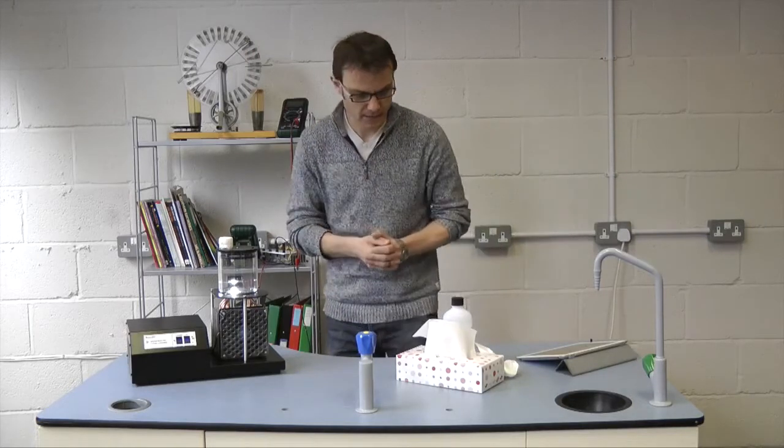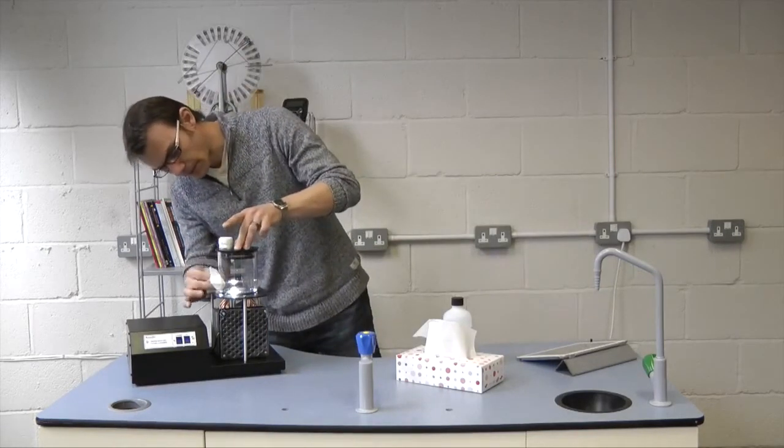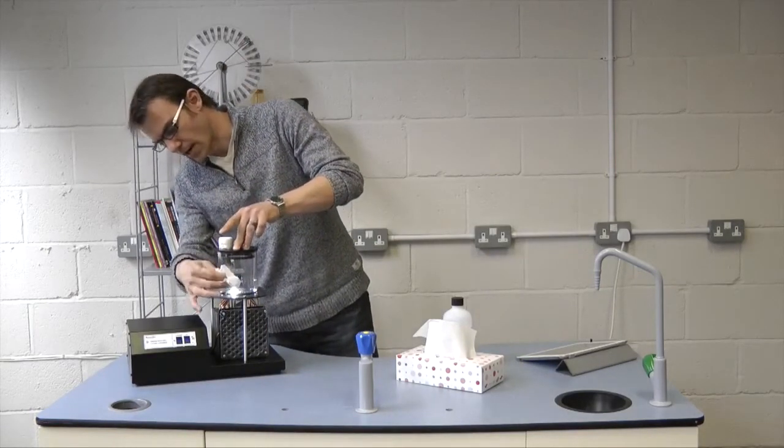What can really improve matters is if you take a soft tissue and gently polish the side of the chamber. This can really improve the tracks that you can see.